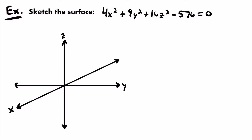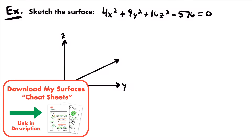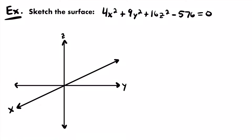We know we have three variables. Another thing I notice is that all three of those variables are squared. I'll write that down — we have all squared variables. Another thing I notice is that each of those variable terms are all positive. None of them are negative. We have positive 4x², positive 9y², and positive 16z². That is another thing you want to identify: the signs of your variable terms. In this case, they are all positive.